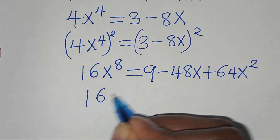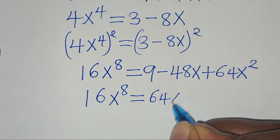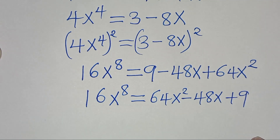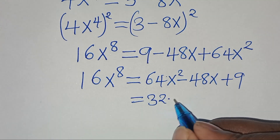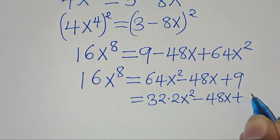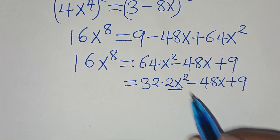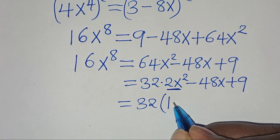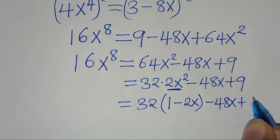So we can write this as 16x to the power of 8 equal to 64x squared minus 48x plus 9. We can express 64x squared as 32 times 2x squared. Then subtract 48x, plus 9. We substitute 2x squared equal to 1 minus 2x, so inside the parentheses we have 32 times (1 minus 2x) minus 48x plus 9.